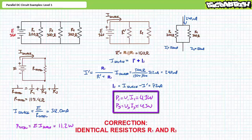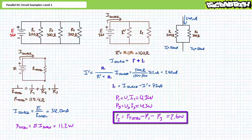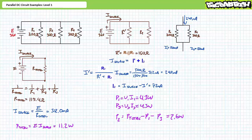The power delivered to the identical resistors R1 and R3 equals voltage times current, yielding P1 equals P3 equals 4.3 watts each. By algebraic manipulation, P2 equals total power minus P1 minus P3, yielding the remaining 2.6 watts. Let's move on to our final illustrated example.